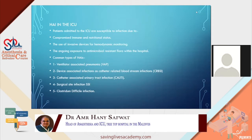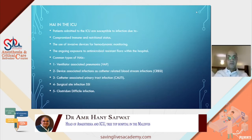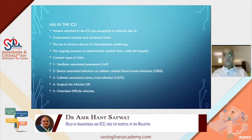Why do hospital acquired infections in the ICU have a very special situation? Patients admitted to the ICU are very susceptible to infection due to their compromised immune and nutritional status. We are using invasive devices for hemodynamic monitoring — central venous lines, arterial lines, urinary catheters. Common types include VAP, catheter-related bloodstream infections, catheter-associated UTI, surgical site infection, and Clostridioides difficile infection.